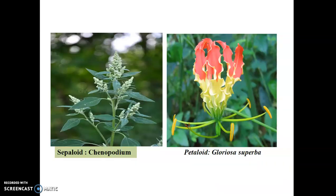In Chenopodiaceae the flowers are greenish. In other flowers the sepal and petal are distinct. The perianth can be colored — yellow, reddish — and this means the sepal and petal are distinct. You can see the closest petal arrangement, and these are the other designs that you can observe in the flower.